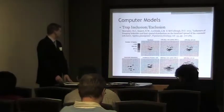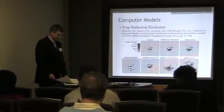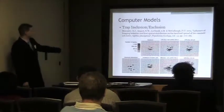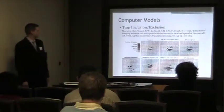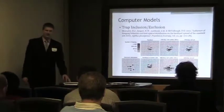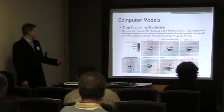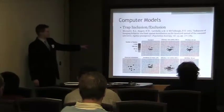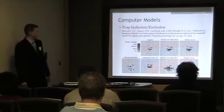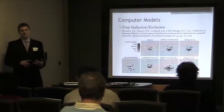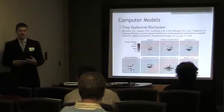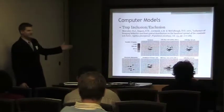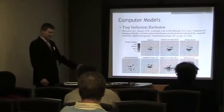Another major model was the ability to include or exclude traps. This model by Mercator, Seager, Leopold, and McCullough, with papers published as of 2011, used a cellular automata approach with multiple grids examining different probabilities of movement. They incorporated biases as well as quarantine and clear-cutting strategies into their analysis to evaluate how effective those scenarios might be.